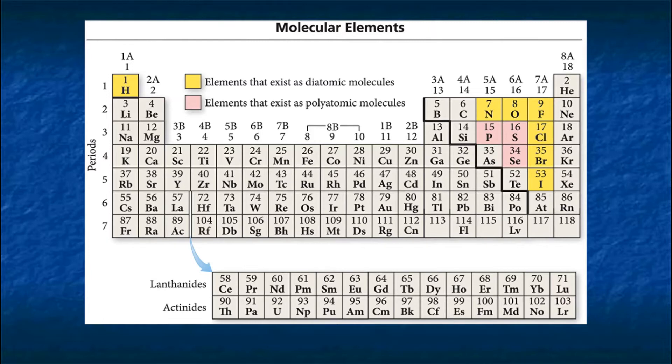They are highlighted in yellow here: H, N, O, F, Cl, Br, and I. There are other ones that exist as polyatomic molecules but let's not be concerned with those for now.